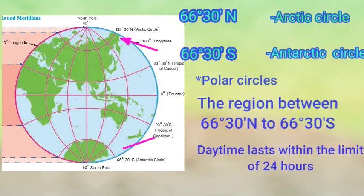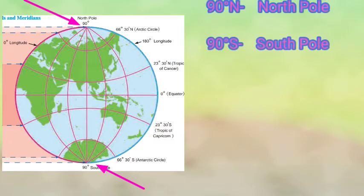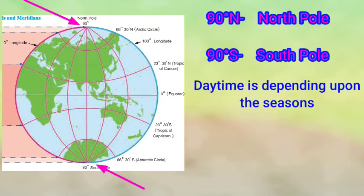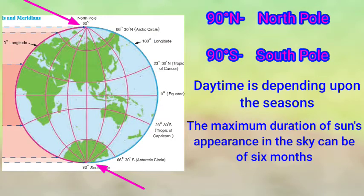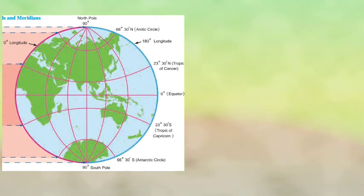Next: the Poles — the North Pole and South Pole. At the poles, daytime duration depends on the season, and the maximum duration of sun appearance can be six months. The sun continues to move in a spiral on the horizon at the pole. This difference in daylight duration makes these important parallels among all 181.